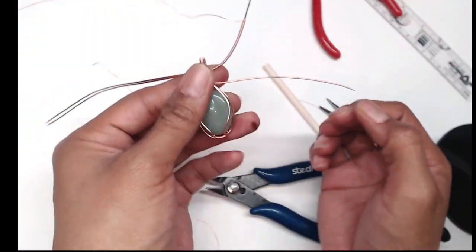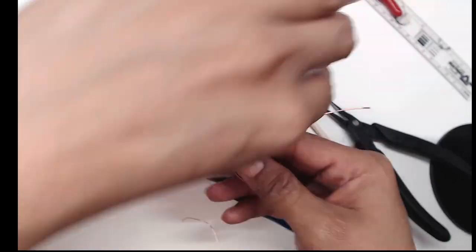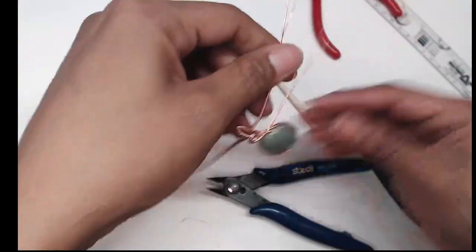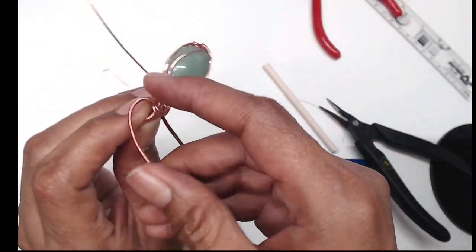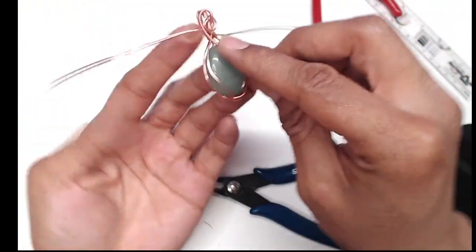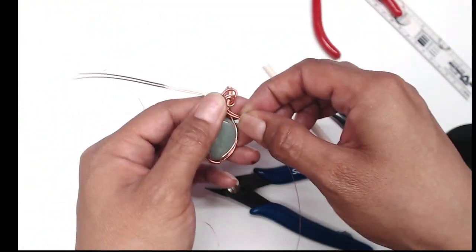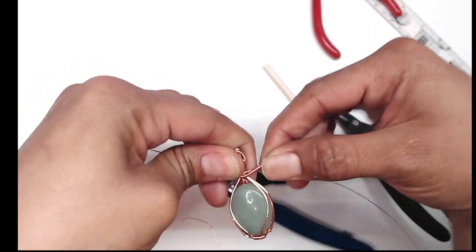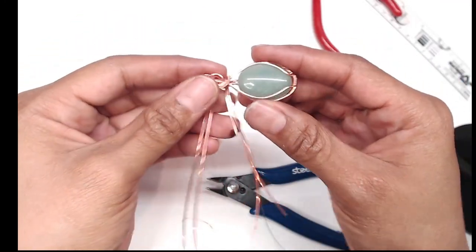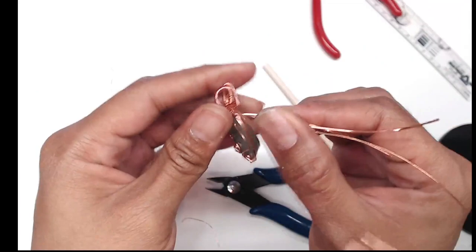When you are happy with it, continue around with the second loop. Now grab your coiled wire and continue a loop around that one. And just like that you have this cute little accent. Hold down your accent and wrap the tail of the two wires around your entire bail like this.